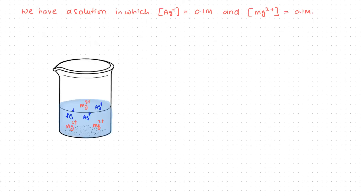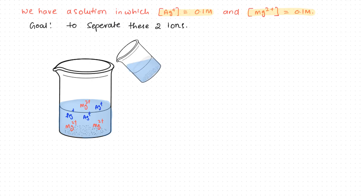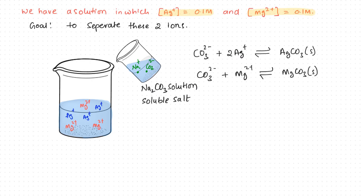Let us suppose we have a solution containing 0.1 molar silver plus ions and 0.1 molar Mg2+ ions. The goal is to separate these two ions. Let's say we slowly start to add sodium carbonate solution to this. Sodium carbonate is a soluble salt, so it is essentially a mixture of Na+ and CO3²⁻ ions, that is carbonate ions. The carbonate ion added to this solution can react with Ag+ and Mg2+ to form respective carbonates, that is silver carbonate and magnesium carbonate.